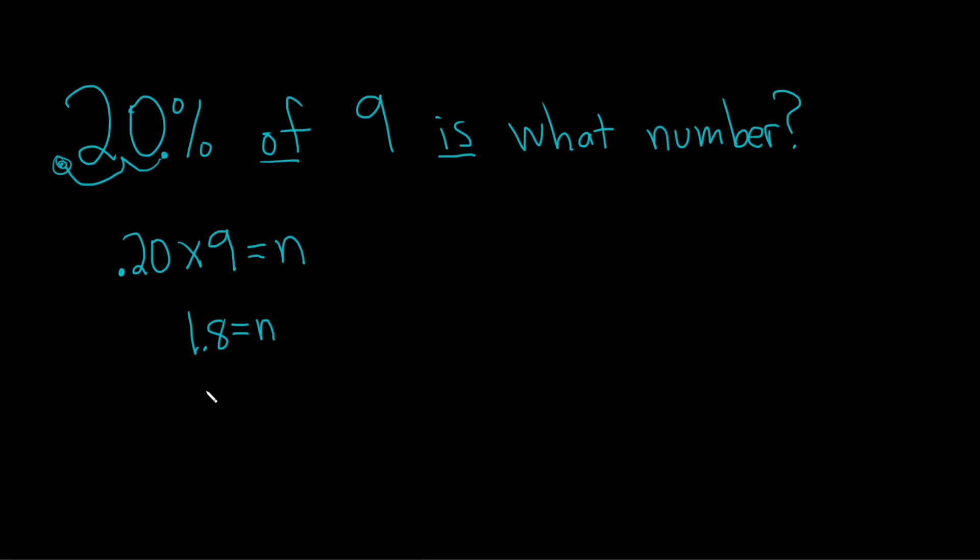And I guess we can write the n on the left. So n is equal to 1.8. So that would be the final answer. Let's read it back together. 20% of 9 is 1.8.